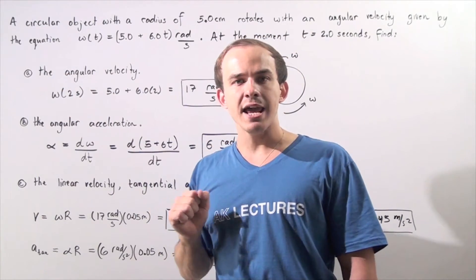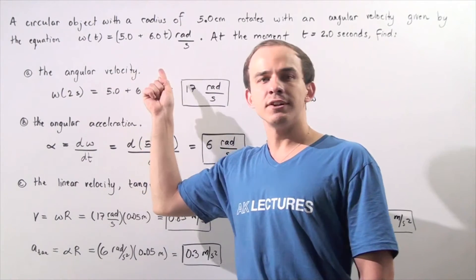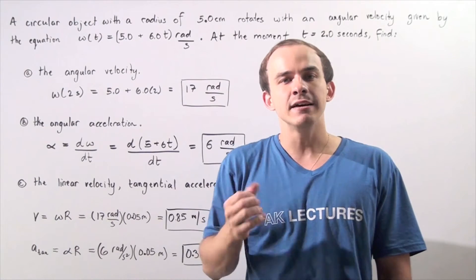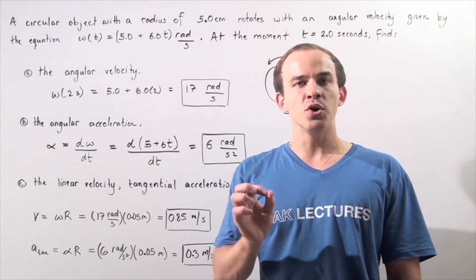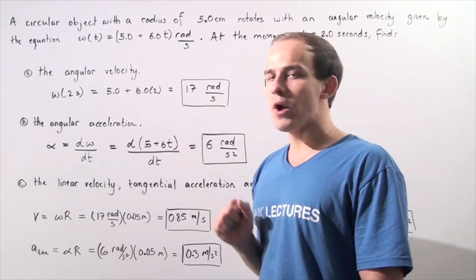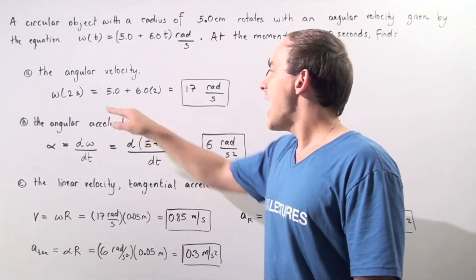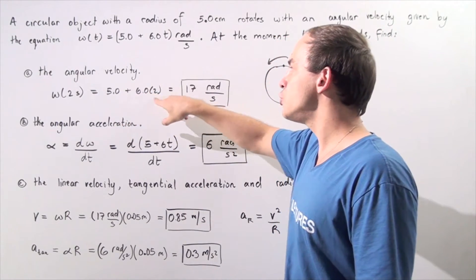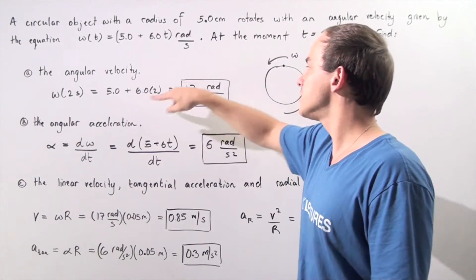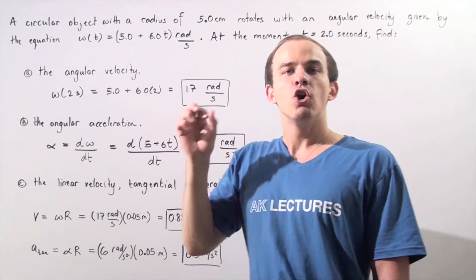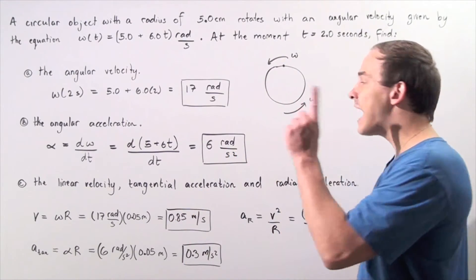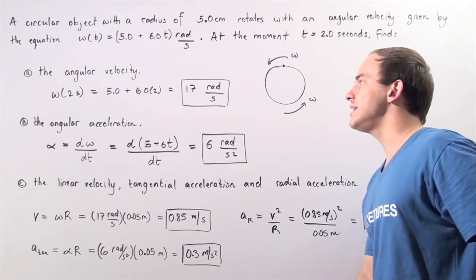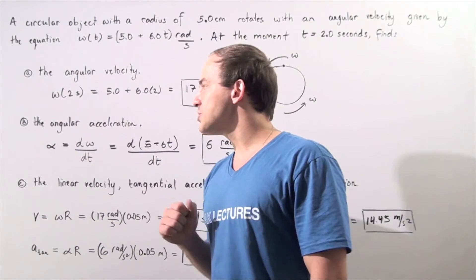Let's begin with part A. We want to calculate the angular velocity at the moment t equals 2 seconds. Because we are given the equation for angular velocity with respect to time, we simply plug in t equals 2 and calculate: 5 plus 6 times 2 equals 5 plus 12, which is 17 radians per second. So at t equals 2 seconds, our object is rotating with an angular velocity of 17 rad/s.